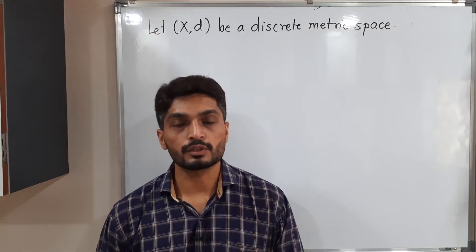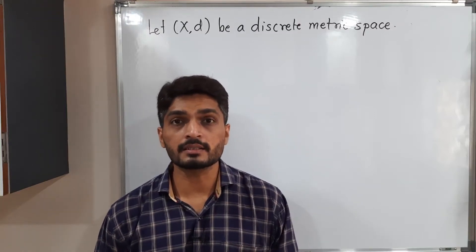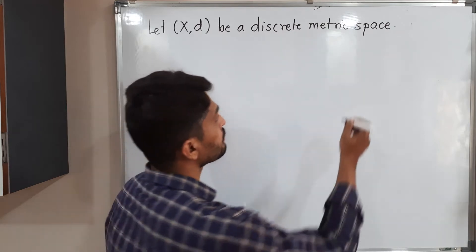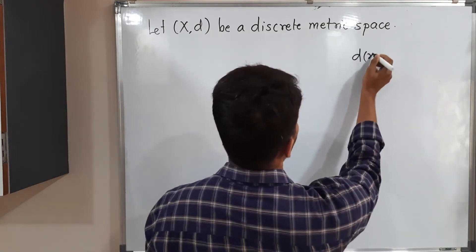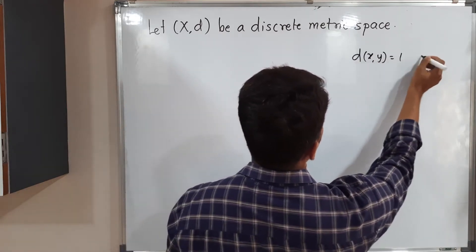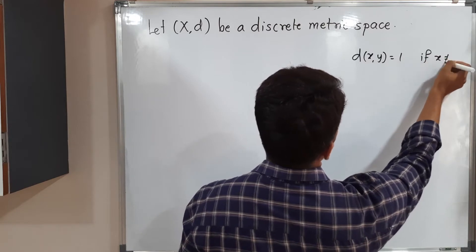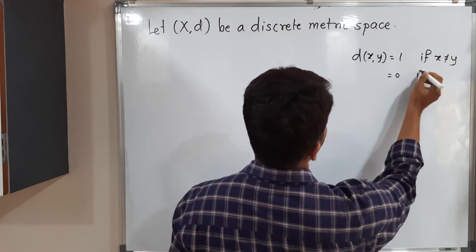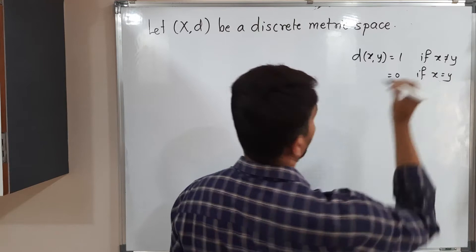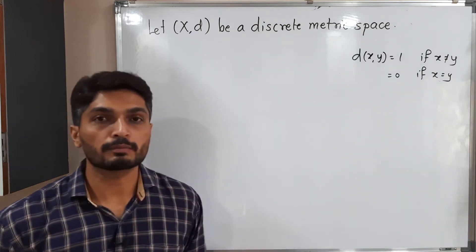Let us discuss this example. Here we have (X,d) as a discrete metric space. I hope you remember the definition of discrete metric: d(x,y) = 1 if x ≠ y and d(x,y) = 0 if x = y. This is the definition of discrete metric.